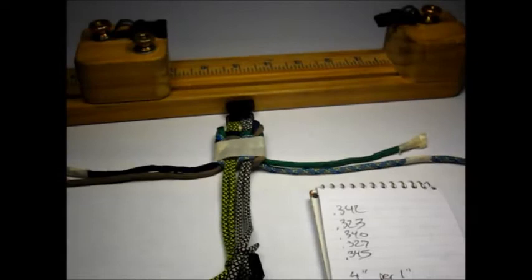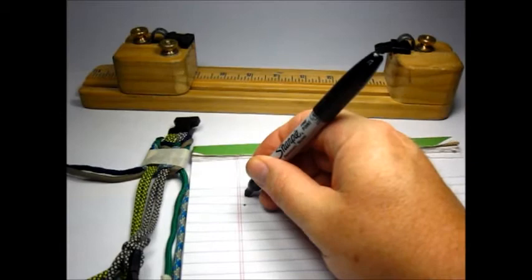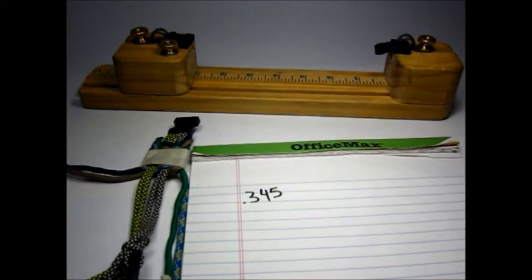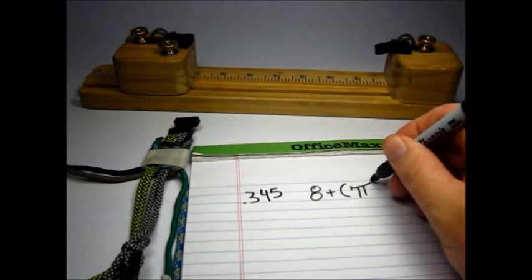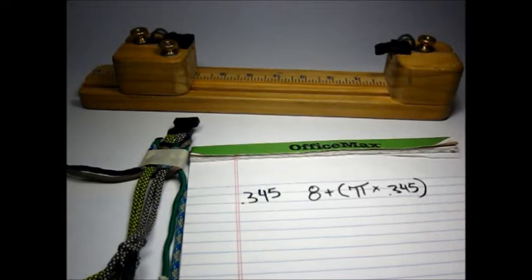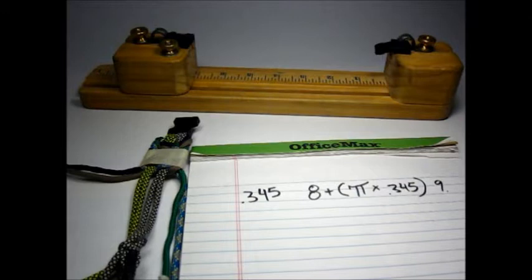Okay, so I took my measurements and I averaged them out. And I get a measurement of .345. I'm making this for an 8 inch wrist. So we're going to take 8 and we're going to add to it pi times my .345. And it comes out 9.08 or something like that. So I've decided I'm going to go 9.08, just to have a little bit of extra.